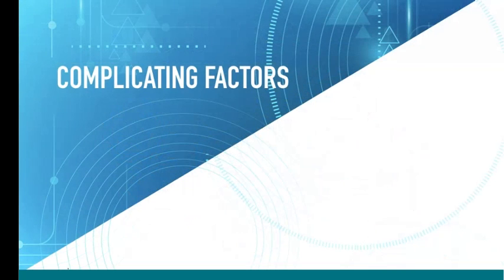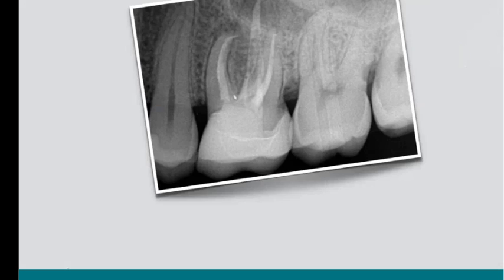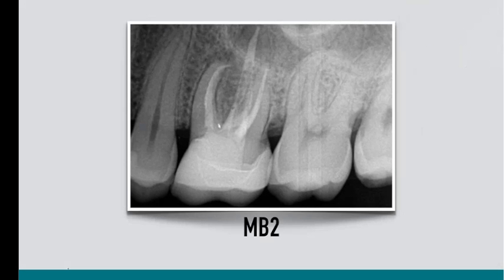Now there are a lot of complicating factors. As an endodontist, I don't get the opportunity to treat a lot of clean cases. The cases I see are full of obstacles: calcifying root canals, obstructions such as instruments, ledges, soft tissue and hard tissue blockages. And of course, we all want to find that MB2 canal, which exists probably almost 100% of the time in maxillary first molars. Being able to clean that root canal system in three dimensions is of utmost importance.